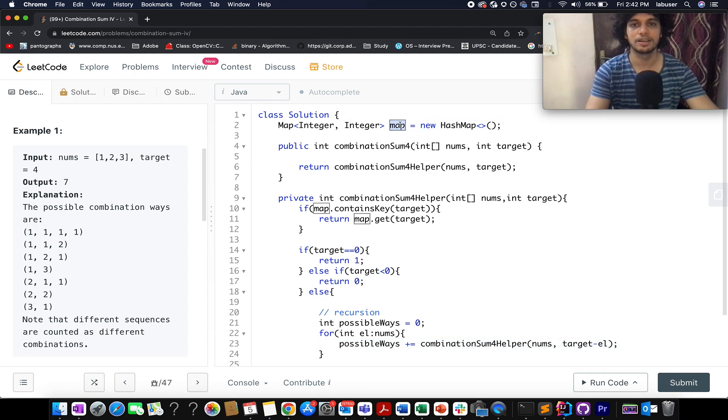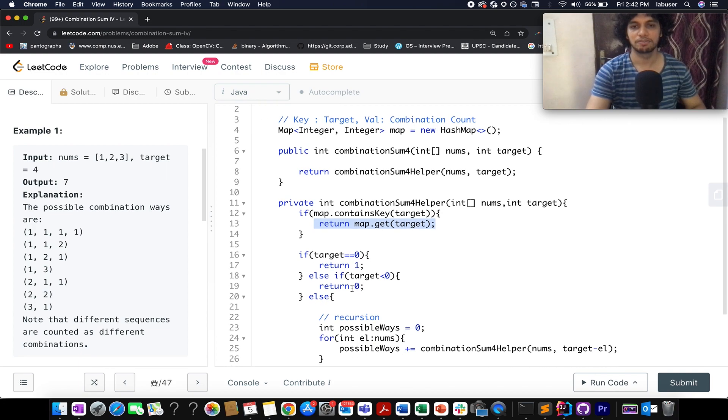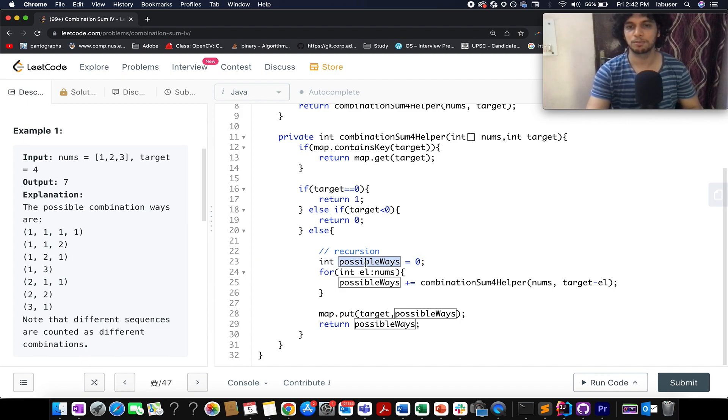So it's very simple guys. It's not that tricky either. Here I've created the map and the map would store the key as the target value and the value would be the sum of the combination count. Here I've created a helper method, combination sum helper. If my map already contains the answer for this target value, we simply return this. If my target value happens to be zero, then I found one possible way. If my target value goes negative, I abort the process and return zero from it. Otherwise, I apply recursion. I have created a possible ways variable and I iterate over all the elements that I have in my nums array. I recursively invoke combination sum helper passing nums and target minus el as the parameter because this would be the next target value.